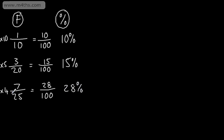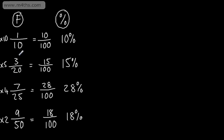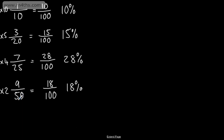We must multiply both the numerator and the denominator by 4 to maintain the value of that fraction. Let's do another one: 9 out of 50. I can see that 50 goes into 100 twice, so multiplying by 2 gives me 18 over 100 — 18 out of 100, which is 18%. All of these denominators are factors of 100: 10, 20, 25, and 50.